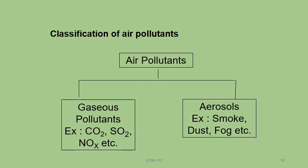The classification of air pollutants: air pollutants are classified into two types — gaseous pollutants and aerosols. Gaseous pollutants include CO2, SO2, nitrogen oxides, etc. Aerosols include smoke, dust, fog, etc.